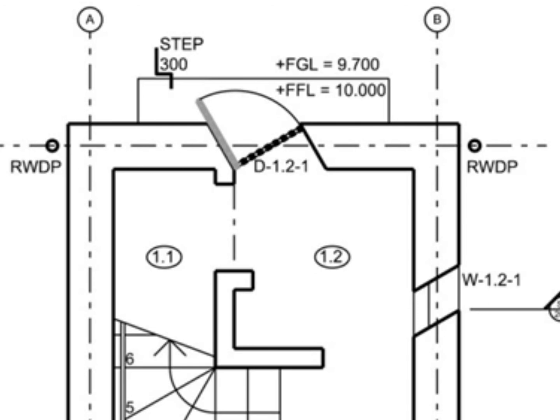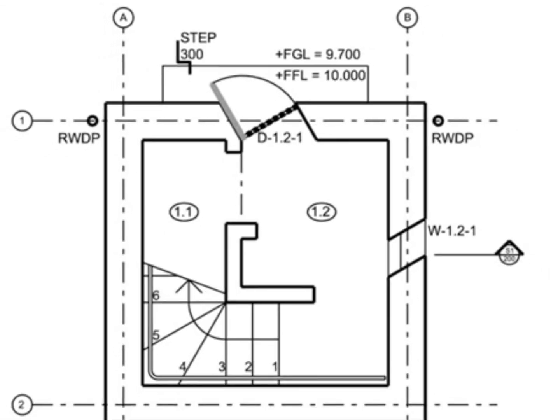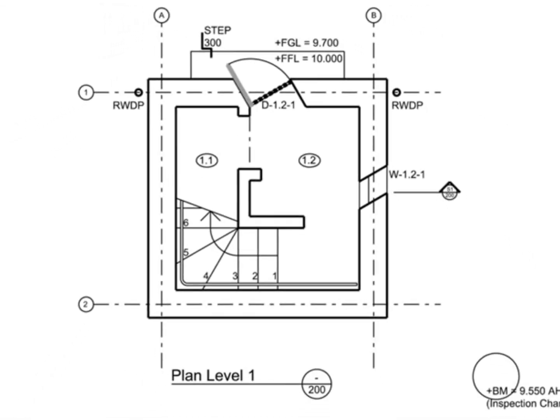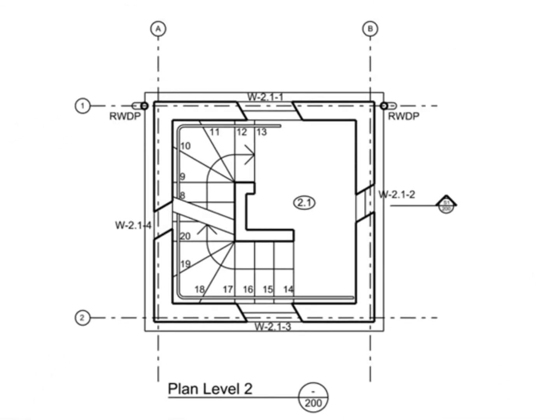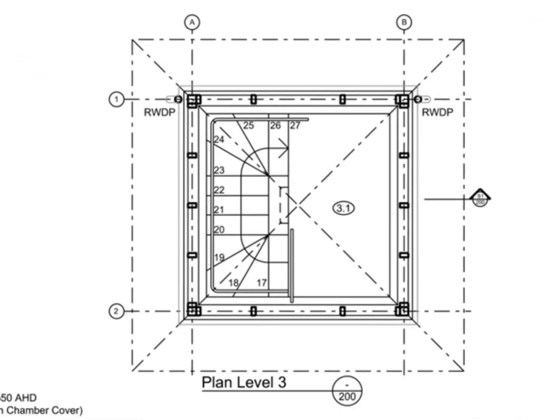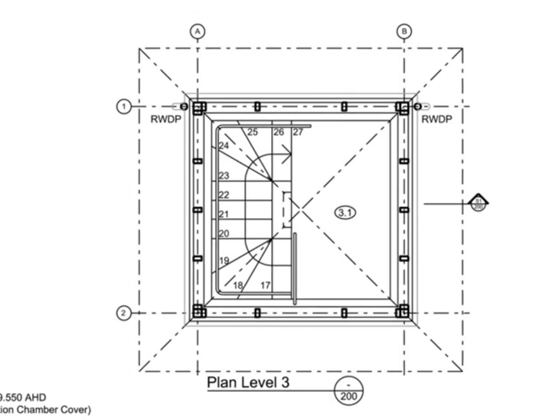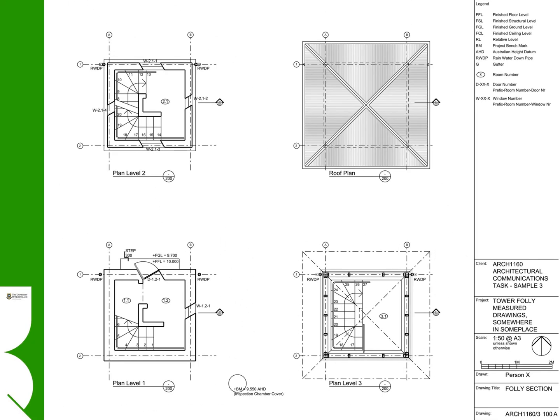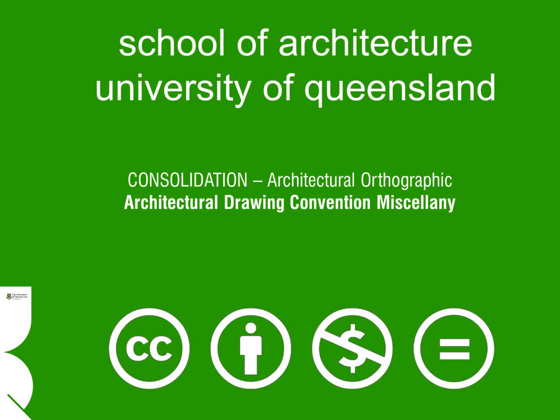This is especially important when producing drawings for builders. We have also included numbers on the rises so that it is very clear how the stairwell works. This is not done universally and is not a convention per se, but many architectural practices do adopt this approach. This ends the Architectural Drawing Miscellany Instructional in the Consolidation Series. Make sure to follow up with the other instructionals in the Consolidation Series. Thanks for your time.